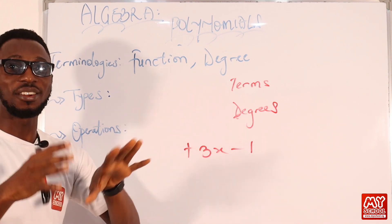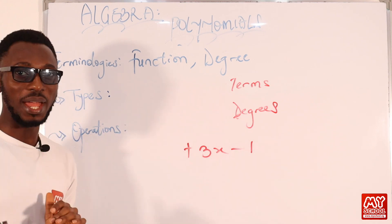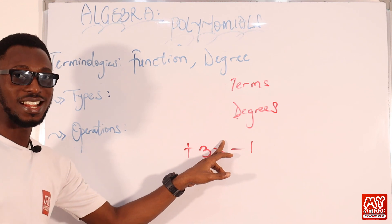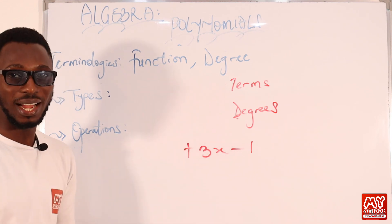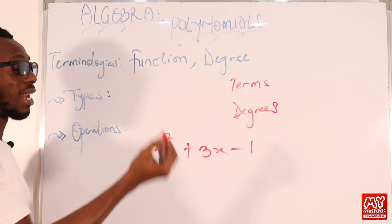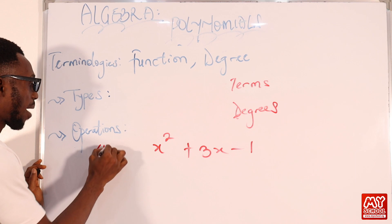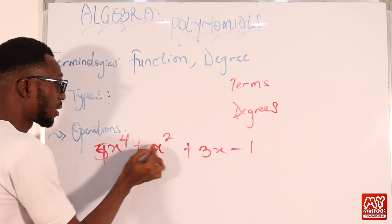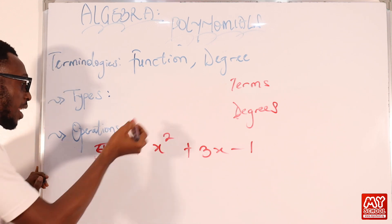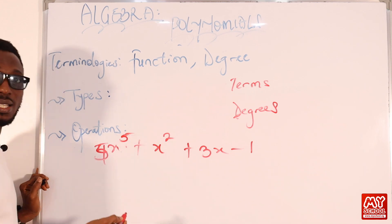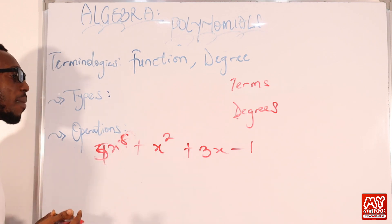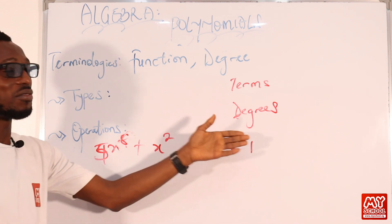Based on the highest degree, we classify polynomials: if the degree is 1, it is a linear polynomial; if the degree is 2, it is a quadratic polynomial; if the highest degree is 4, it is a quartic polynomial — for example, 5x⁴; if the degree is 5, it is quintic; and if the degree is 8, that is an octic polynomial.